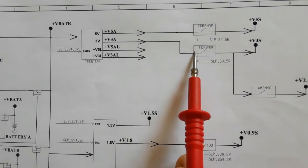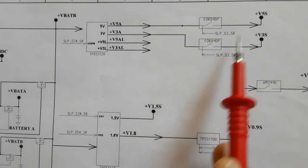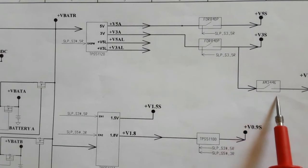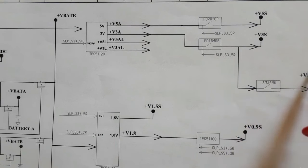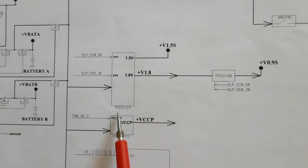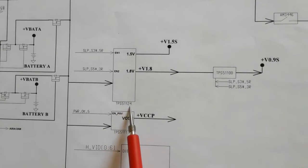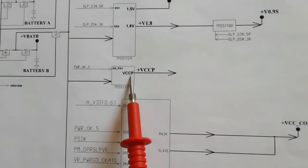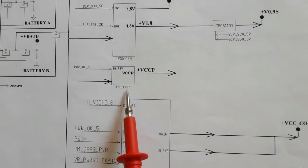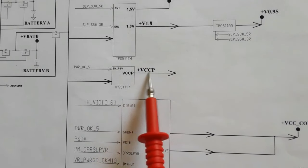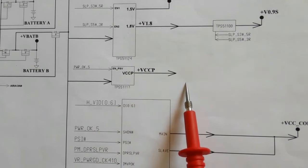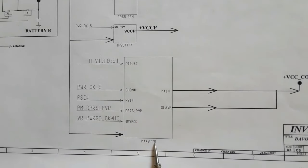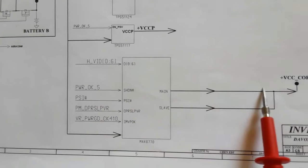Through these MOSFETs we will get 5 volt and 3 volt. The 3 volt will be converted via a switch to 2.5 volt. Here we have TPS51124 that generates 1.8 volt and 1.5 volt. This is the VCCP power management IC — it generates plus VCCP for the processor and chips. And here is the MAX8770, the power management IC for the CPU, which generates plus VCC core.